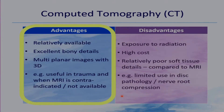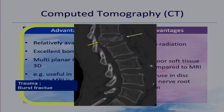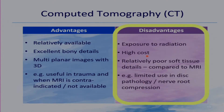Advantages of CT are that it is a relatively available investigation, gives excellent bony details, and images are available in multiple planes with 3D reconstructions. Therefore, it is useful in trauma and when MRI is contraindicated or not available. For example, this CT elegantly shows a burst fracture of the L1 vertebral body. The disadvantages of CT are exposure to radiation, high cost, and relatively poor soft tissue details compared to MRI, limiting its use in disc pathology or nerve root compression.